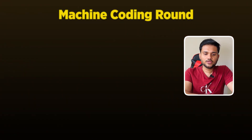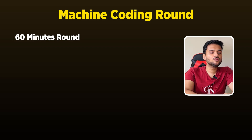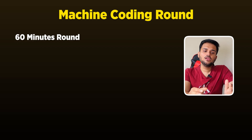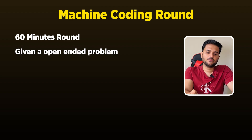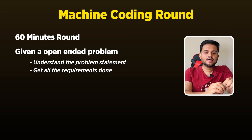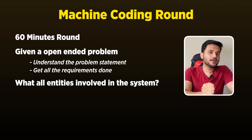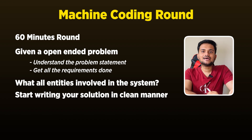So first of all, before we jump to the questions, let's understand what the expectations are in machine coding rounds at Uber. In Uber, the machine coding round generally goes on for about 60 odd minutes — it's not a 90 minute round like you might see in companies like Flipkart. In this 60 minute round, you will likely be given a very open ended problem statement. You have to focus on understanding the problem statement properly, get all the requirements done, understand what entities are involved, and start writing your solution in as clean a fashion as possible.